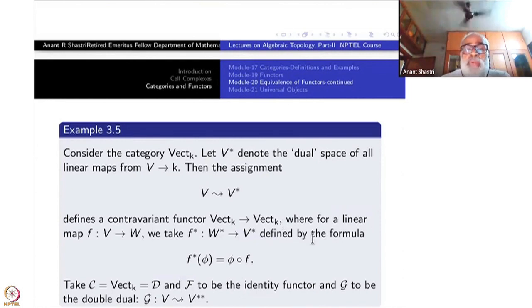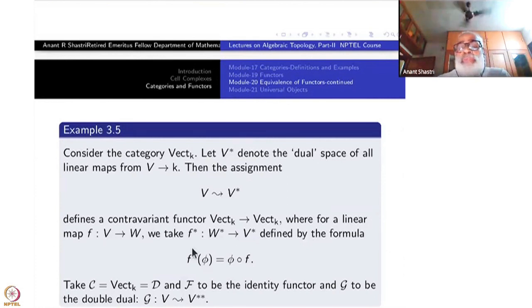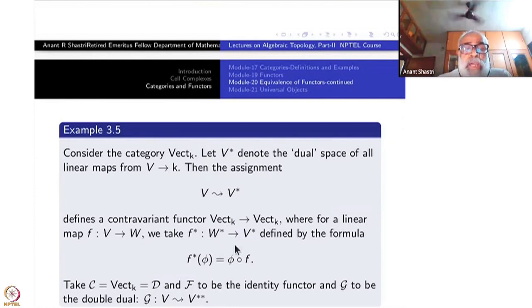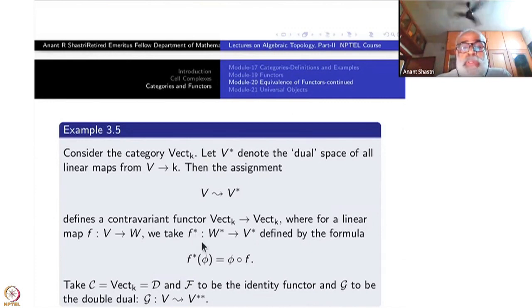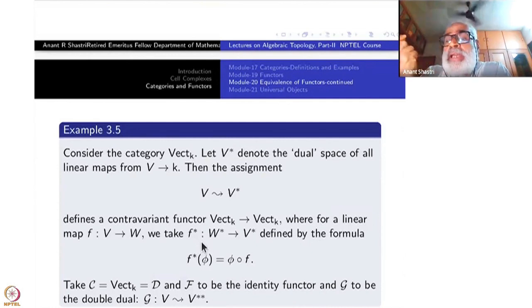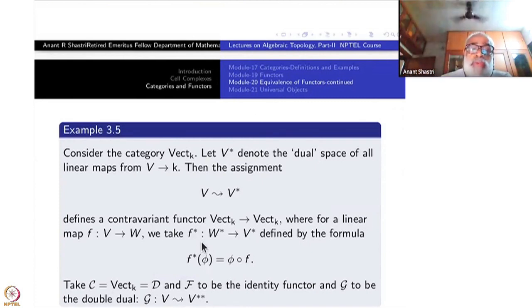For example, take a linear map from V to W. What is f star? I define the star construction here. V becomes V star, W becomes W star, and the arrow goes the other way — some f star which must be a linear map. You have to define f star and verify that g composite f star equals f star composite g star, and the identity's star is the identity of the corresponding stars. First, f star of phi is nothing but phi composite f.